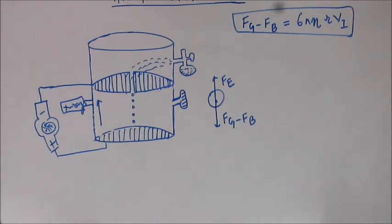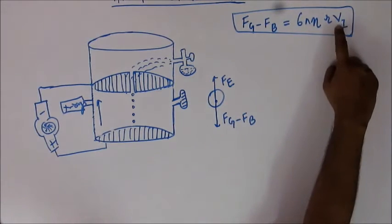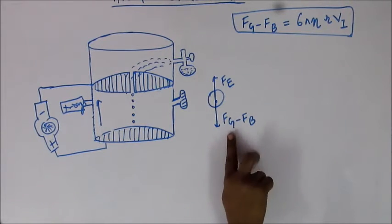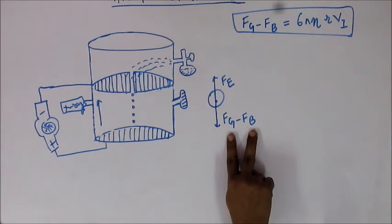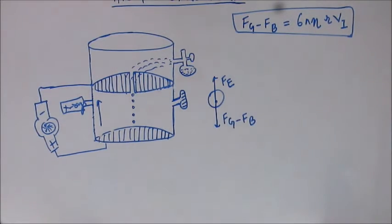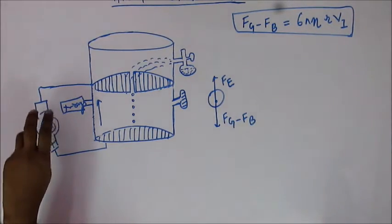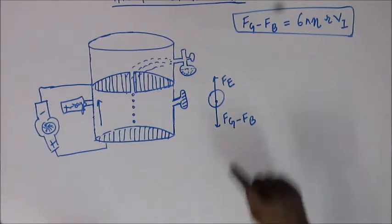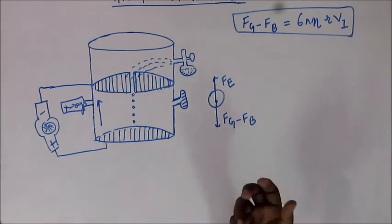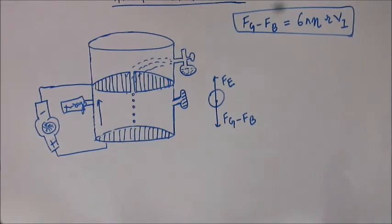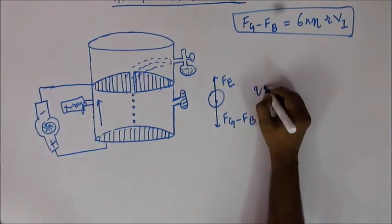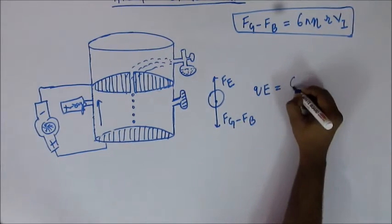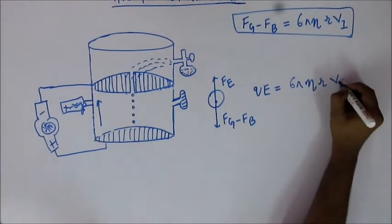Because if the velocity is zero, then the drag force will be zero. Remember, drag force is proportional to velocity. So when it is suspended in the air, there is no drag force — it is only gravitational force minus buoyant force. And that should be equal to the electric force. Since this is a variable voltage source, you can vary the voltage to bring the electric field to such a value that the electric force becomes equal to Fg minus Fb and the oil drop is suspended in the air. If you are able to do that, then Q × E = Fg − Fb = 6πηRV₁.